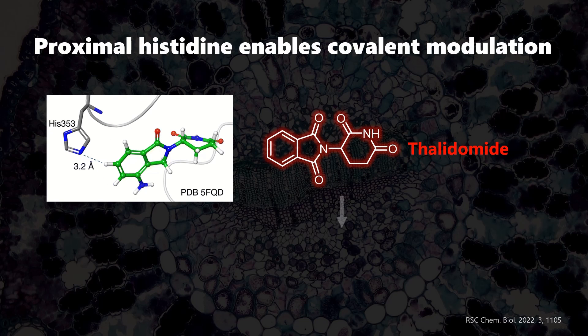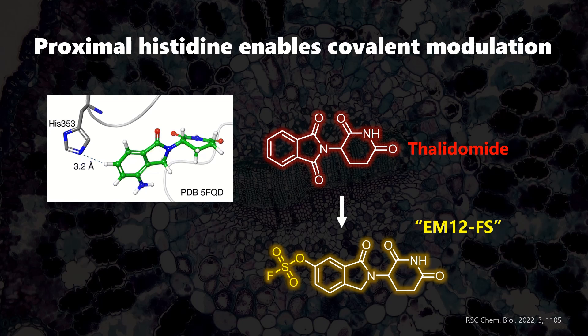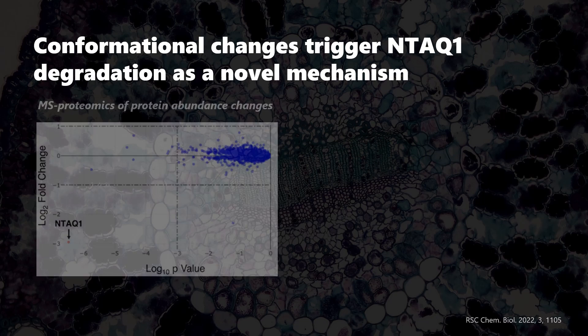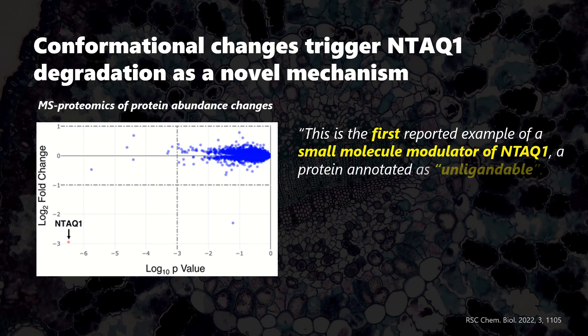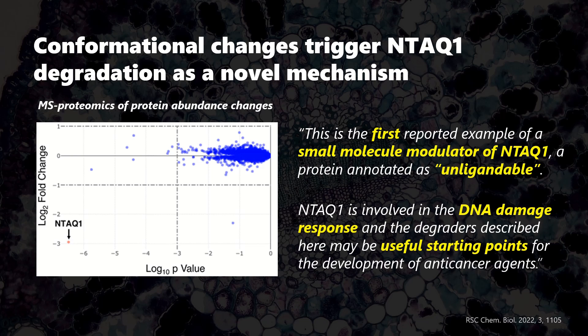We will close with a final next-generation idea. Scientists noted a histidine residue close to the molecular glue binding site. By creating analogues with electrophilic groups such as the highly reactive fluorosulfate, a covalent bond can be triggered with the proximal histidine. This covalent modification triggers broader conformational changes which modulate cereblon's activity. Scientists found that this covalent modulator led to the degradation of the so far elusive protein NTAL1, potentially unlocking even more avenues for drug discovery in different tumor types.